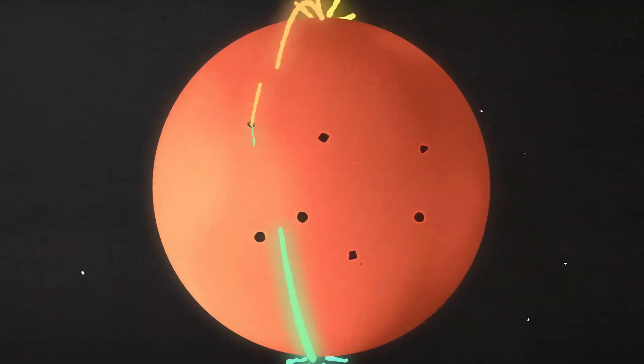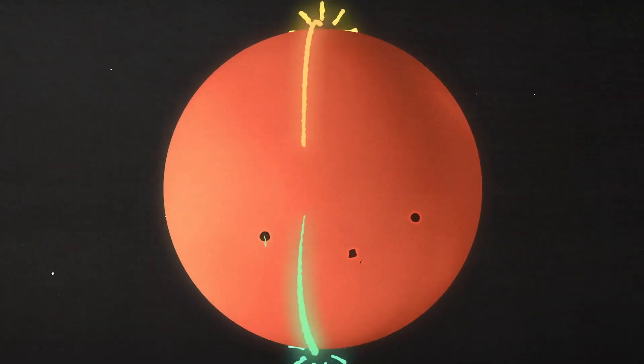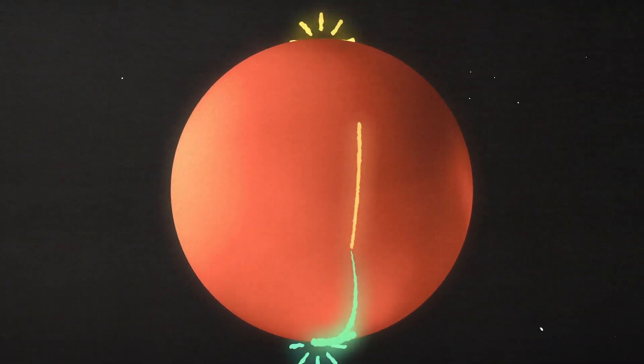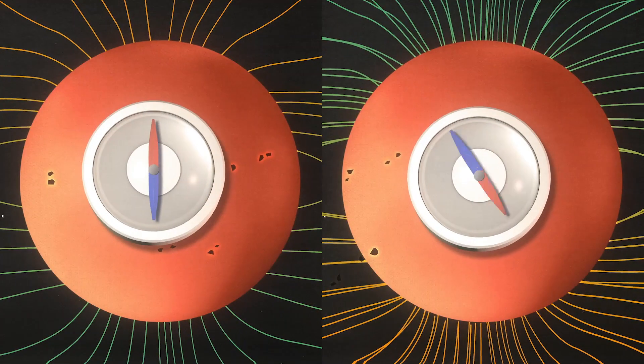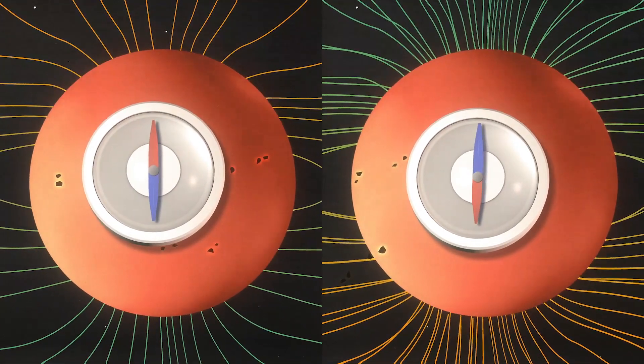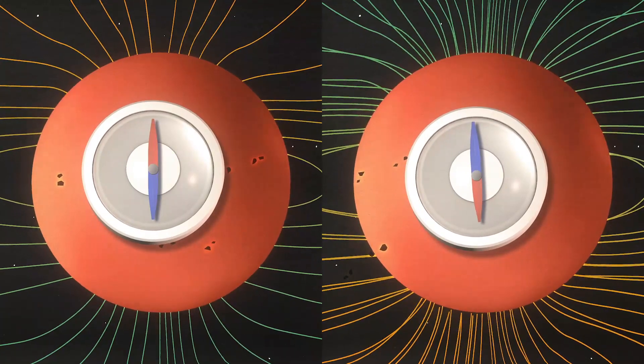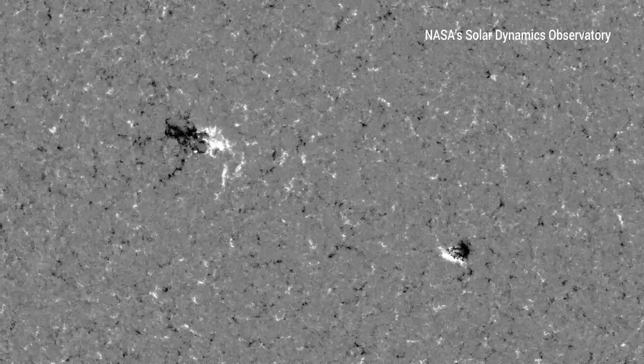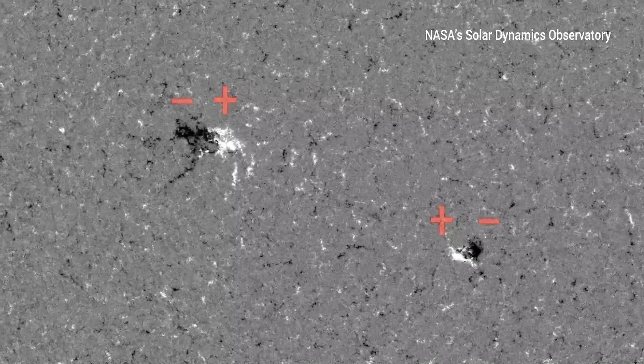Leaving behind remnants of magnetic fields that move towards the sun's poles. Eventually, each pole accumulates enough magnetic fields, forcing the sun's poles to flip at the peak of the cycle. Then, new sunspot groups appear with the polarities in the opposite direction.